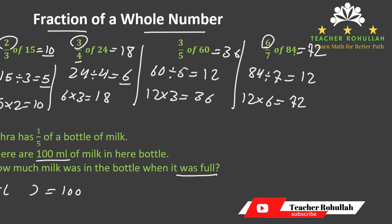How much is the whole bottle? Or how much milk was there when the bottle was full? To do so, to find how much milk was there, we multiply 100 by 5 and it gives us the number here. So 100 times 5 is equal to 500 which in this case is ml.